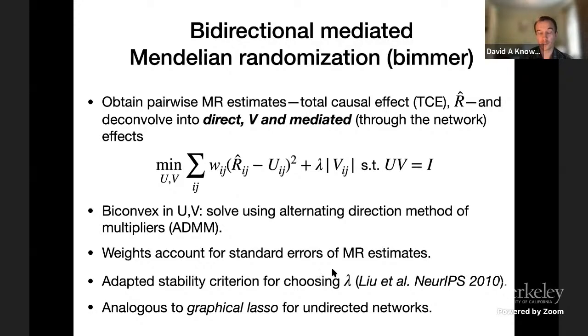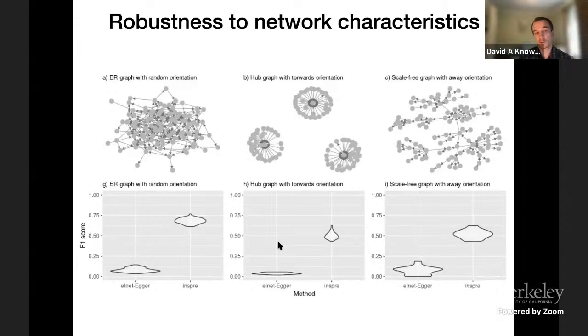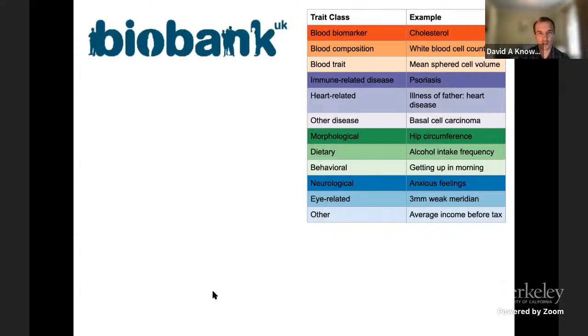We've done a large number—I should say Breeland really has done a large number—of simulations generating random graphs with different characteristics and also different ways of orienting the edges. We seem to be broadly robust to how the network loads. It's an interesting problem because there aren't very obvious baselines to compare to, but the simple baselines we can come up with, we perform much better than.